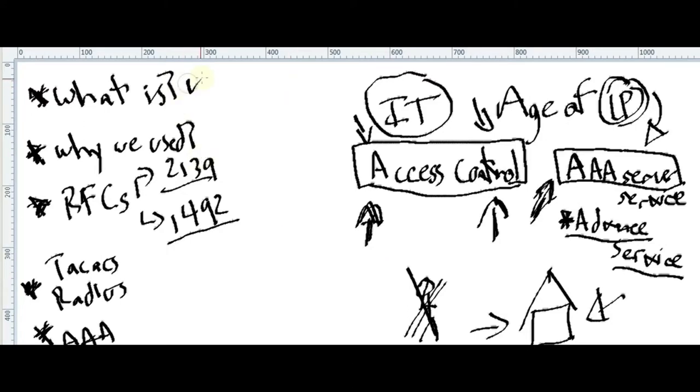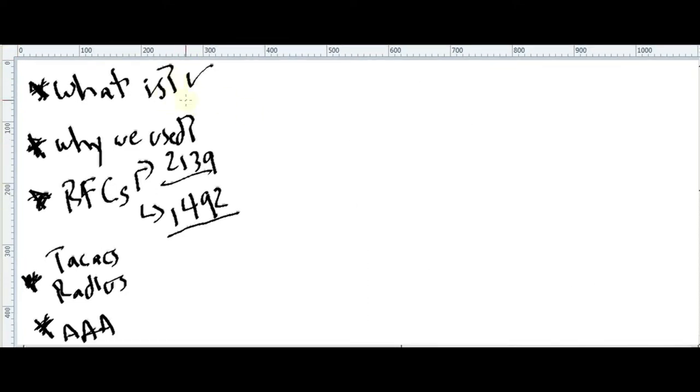So basically access control in information technology will be to have the access control of your infrastructure, an IT overview. Okay so let's start with what is an AAA server. Let's split here the A's. So what is AAA? AAA, the first one is authentication.